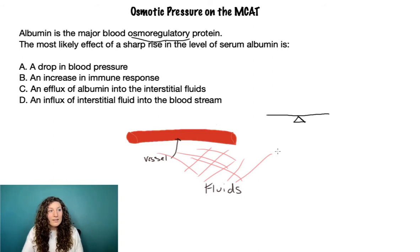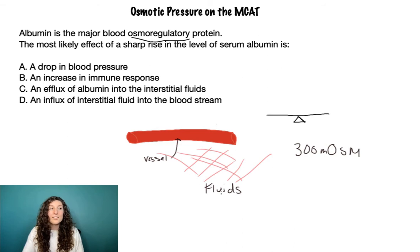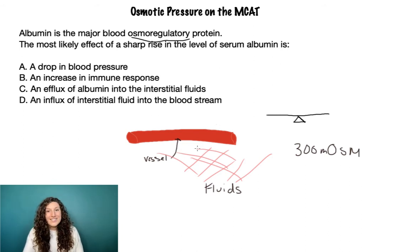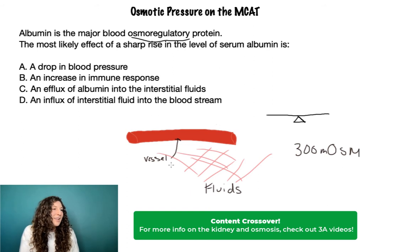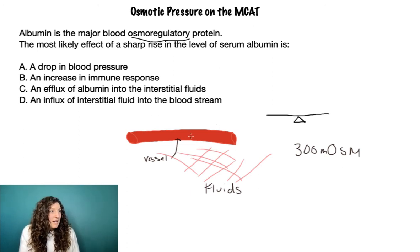In the human body, the average osmolarity is 300 milliosmoles. So in both the interstitium and in the blood vessels, we want an osmolarity of 300 milliosmoles. The exception is the kidney, where the goal is to actually increase the concentration of solute before excreting it as urine. In this situation, according to the question stem, we've increased the concentration of albumin in the bloodstream.